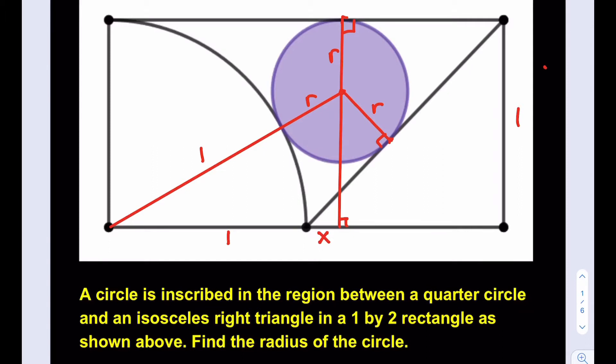In this little right triangle, the angles are 45 degrees because this is an isosceles right triangle — this is a 90 degree angle. So the other leg is also going to be x, and the hypotenuse is going to be x√2. This side is going to be r, and this is also going to be r, because this angle is also 45 degrees. The hypotenuse of that piece is r√2.